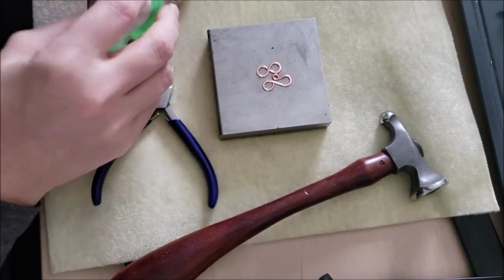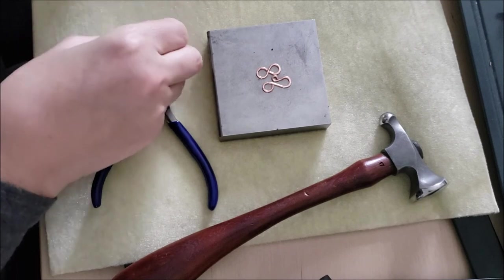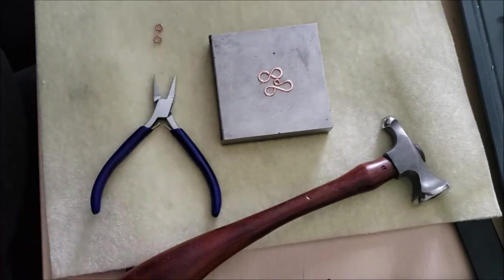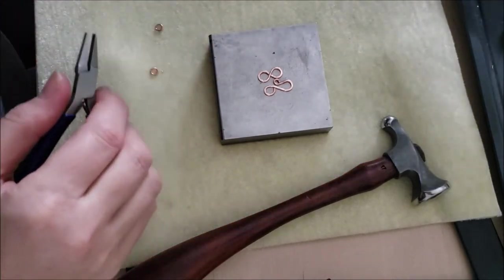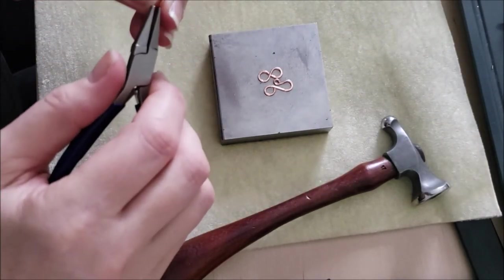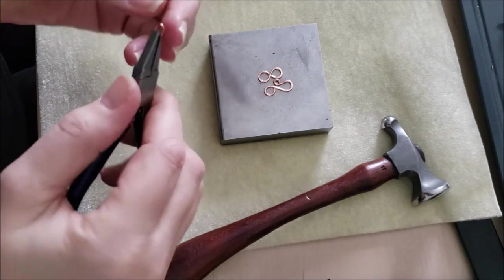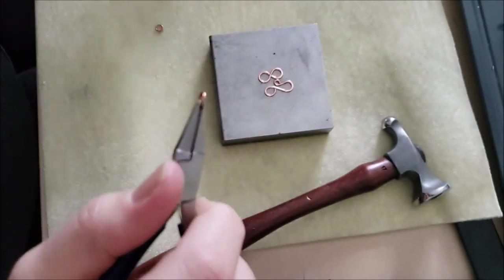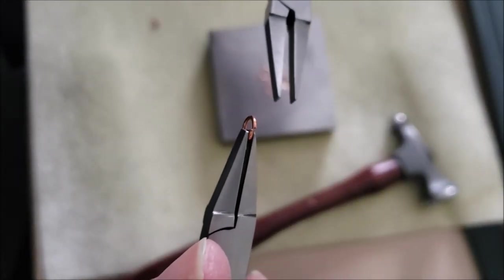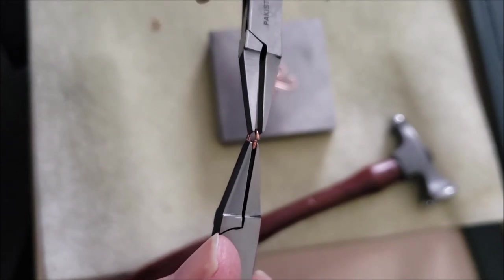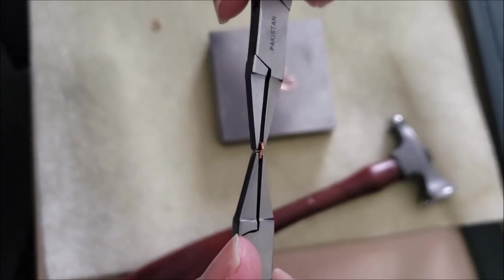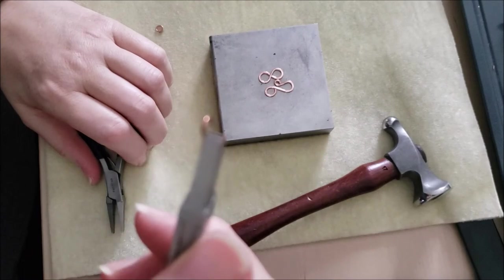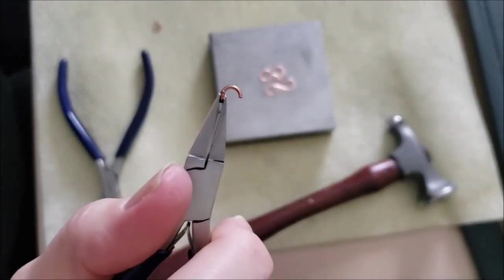The next thing we need to do is attach a pair of jump rings. These are pre-made 18 gauge jump rings with an inside diameter of four millimeters. I bought these from one of my favorite suppliers online. You look for the opening. I'm going to get up close to the camera for this. You open jump rings like this. You start like this and you twist. So now that jump ring is nice and wide open.